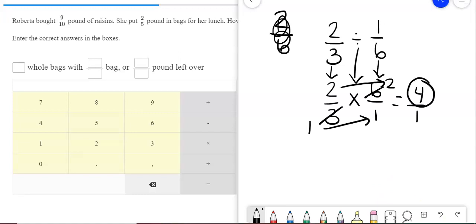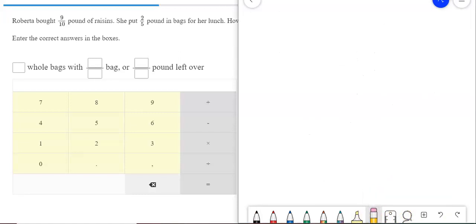Let's get up the work page. She has nine-tenths. So, that's how many she has total, and we're going to be dividing them into two-fifths. The first fraction comes straight down. The division changes into multiplication, and we flip the second fraction.